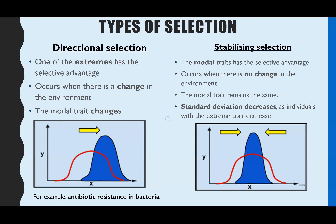In contrast, stabilising selection is when the modal trait from the original population still remains the trait with the selective advantage and stays the most common. This happens when there is no change in the environment, so whatever allele or trait gives the selective advantage continues to do so. Over many generations, more and more individuals have that modal trait and the extremes are lost — you see a decrease in standard deviation, a decrease in the range of alleles in that population for that particular gene.